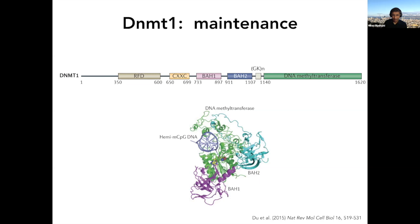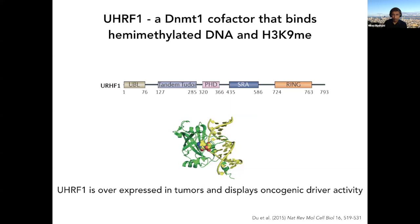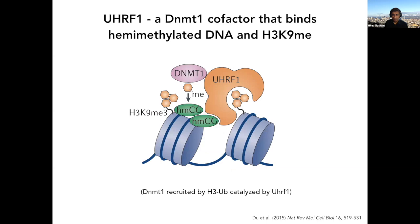The maintenance enzyme DNMT1 functions not by itself but with a cofactor called UHRF1. UHRF1 binds hemimethylated DNA and methylated chromatin — it has an SRA domain that recognizes specifically hemimethylated DNA, and tandem Tudor domains that recognize histone H3 lysine 9 methylated tails. UHRF1 is overexpressed in many tumors and is an oncogene. It also has a ubiquitin ligase activity for histone H3. DNMT1 is recruited by binding the ubiquitin placed on H3 tails by UHRF1, and has about a 30-fold specificity for hemimethylated DNA over unmethylated DNA.